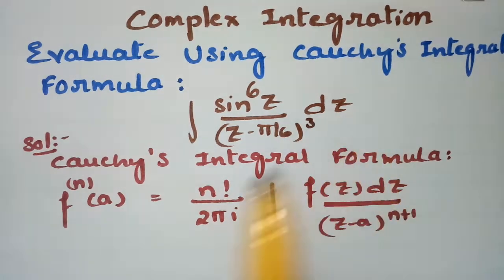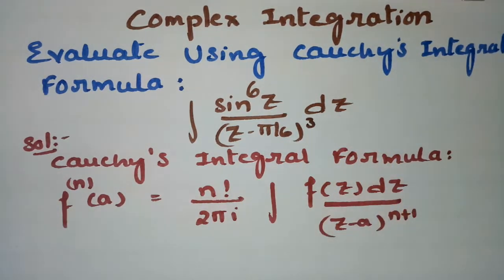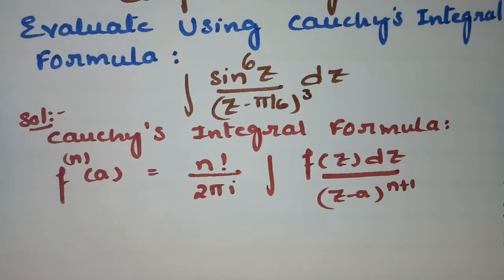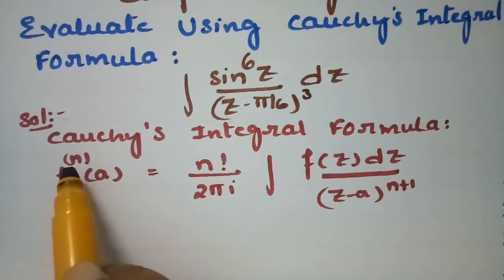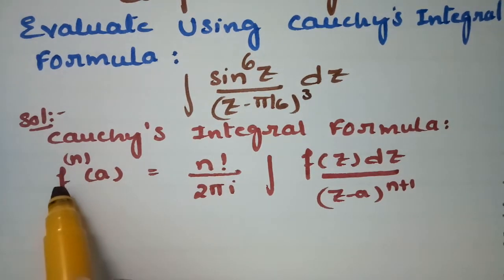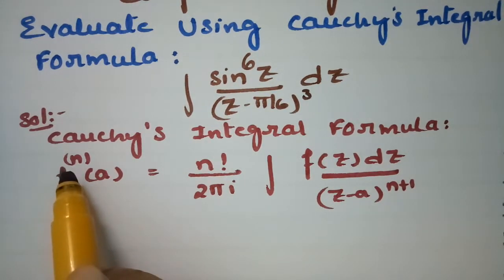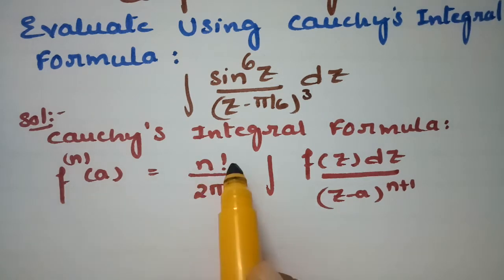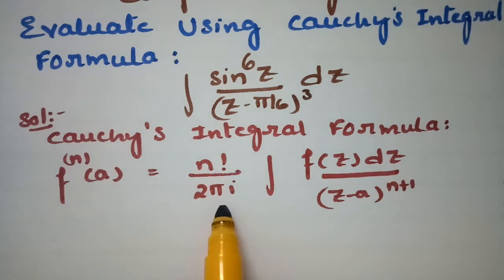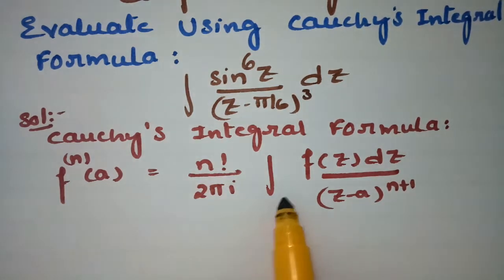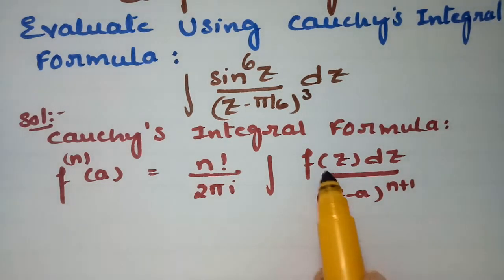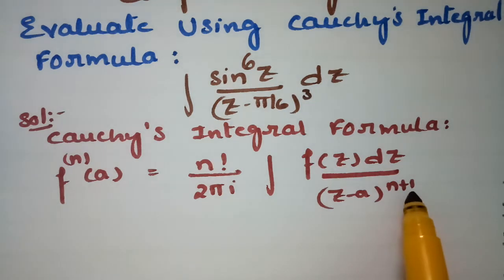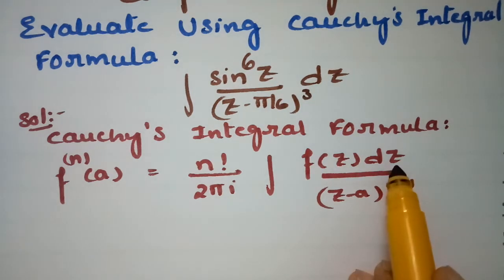So what is Cauchy's integral formulae? The generalization of Cauchy's integral formulae states that the nth derivative of f at a is equal to n factorial divided by 2πi times the integral of f(z) divided by (z minus a)^(n+1) dz.